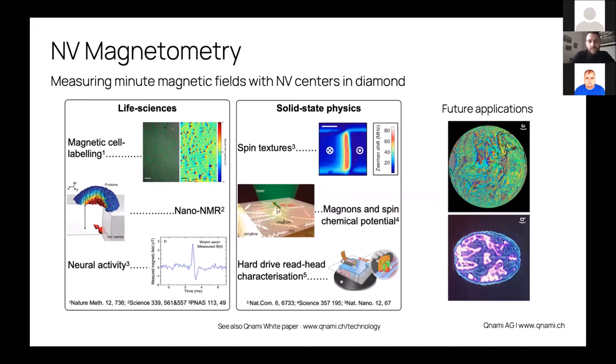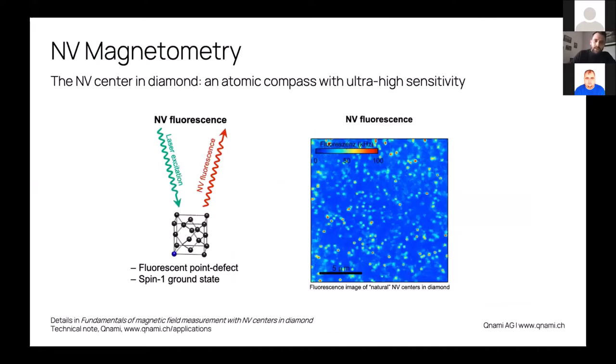There's been demonstration of using NV centers in diamond for making extremely localized NMR measurements on the nanoscale, measuring neural activity, but also in material science. Measuring spin textures, magnons and spin mechanical potential. Some work in the hard disk drive industry has happened, and I'm adding on the right here some applications which are pursued today around navigation through magnetic imaging of the earth field and also in brain imaging.